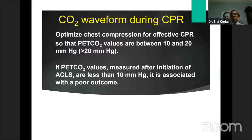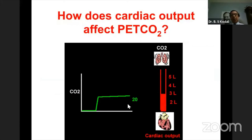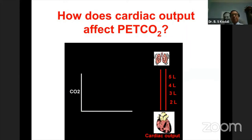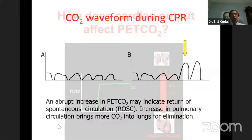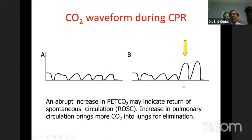The American Heart Association has implemented capnography into their ACLS protocol. A 2-liter cardiac output corresponds to about 20 mmHg of CO2. When giving chest compressions, a sudden increase in CO2 measurement indicates return of spontaneous circulation — the heart has started a spontaneous rhythm and is generating cardiac output, reflected in the increase in end-tidal CO2.